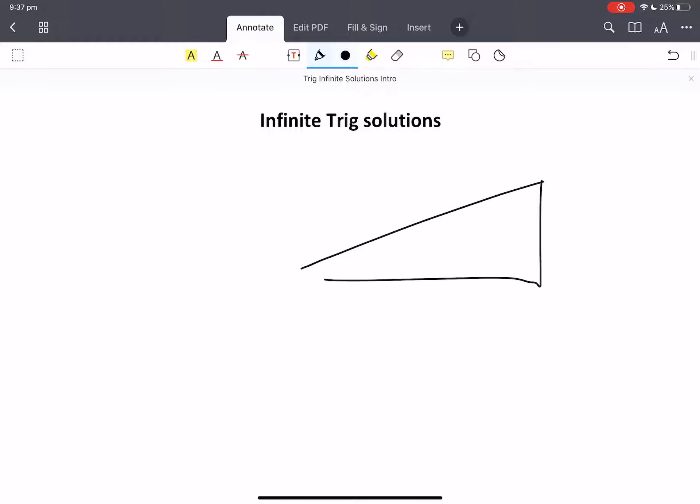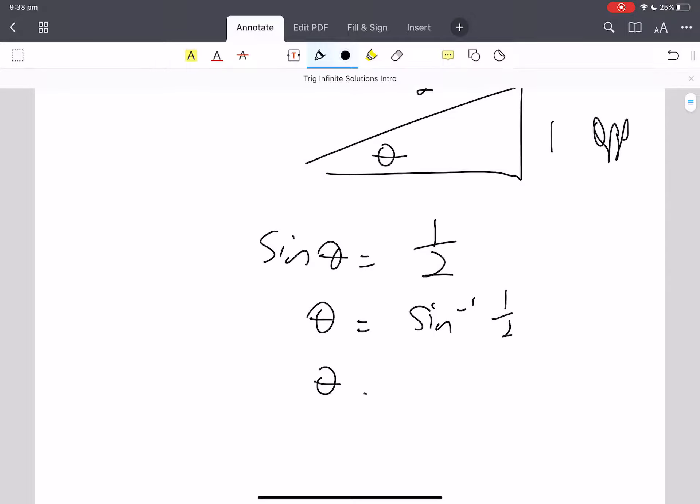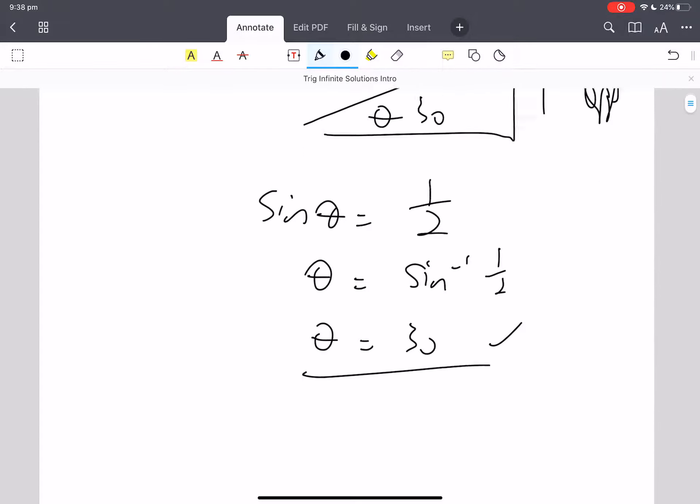Grade 9: 1, 2, find theta. We said we know that's opposite and that's hypotenuse, so sine theta equals a half. We used our calculator to do the arc sine a half and got theta equals 30. And we ticked that and thought that was pretty good.